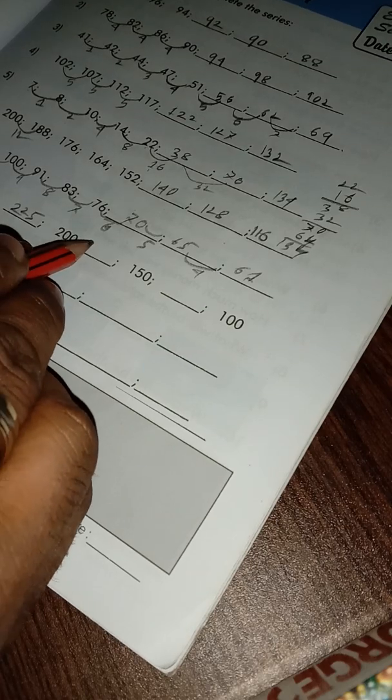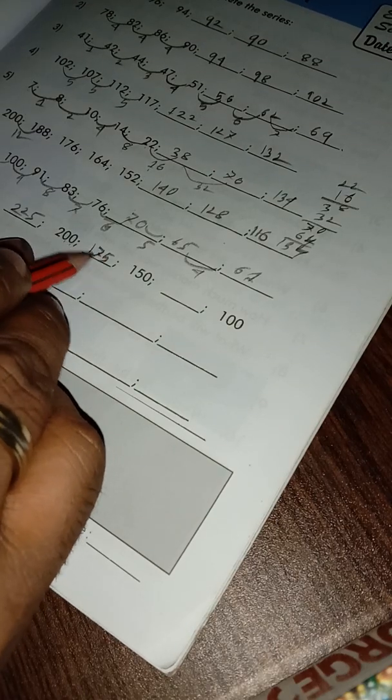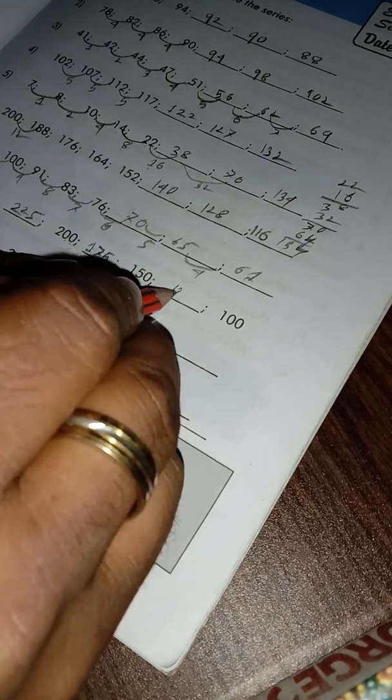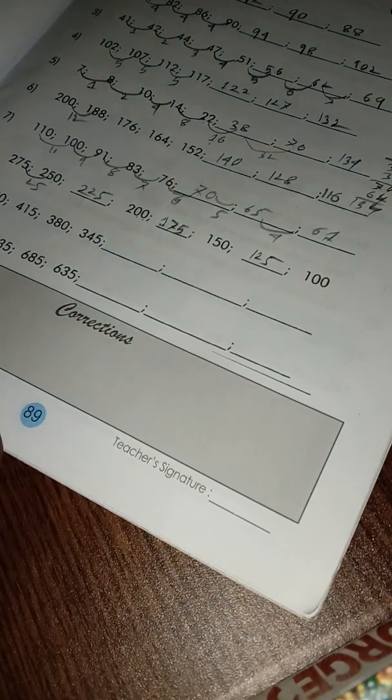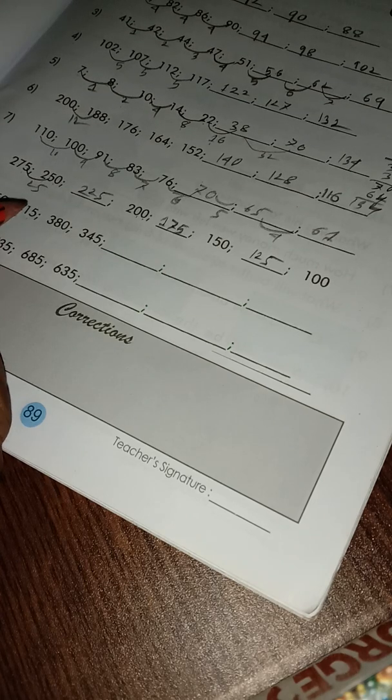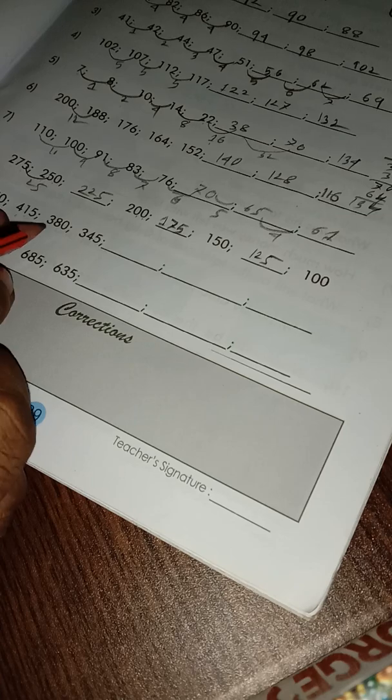As there is decreasing by 25, 150, minus 25, 125, minus 25, 100. Now 450, difference is 35. 450 minus 35 is 415, minus 35 is 380.